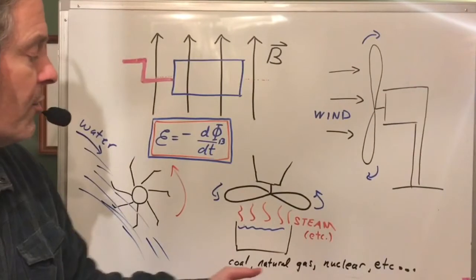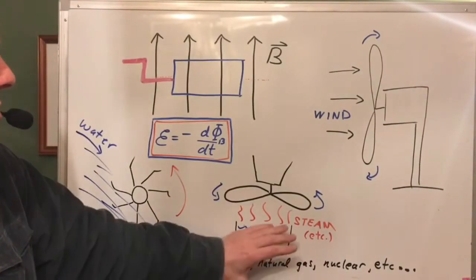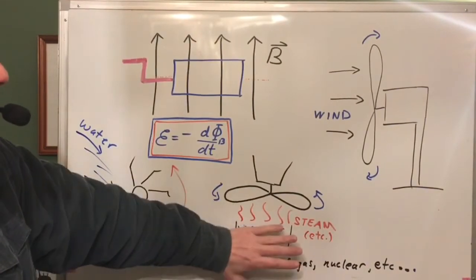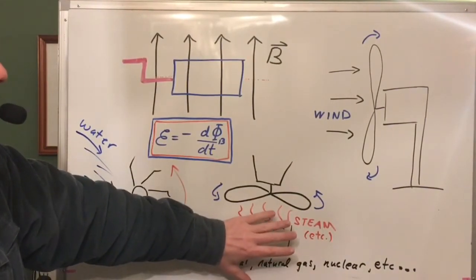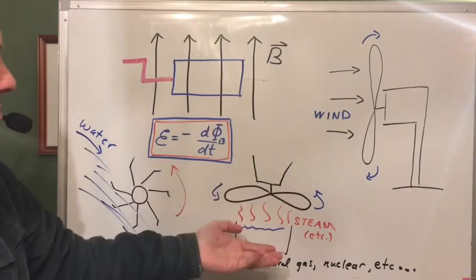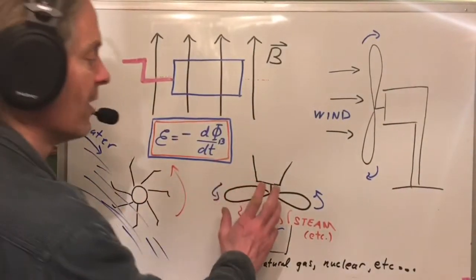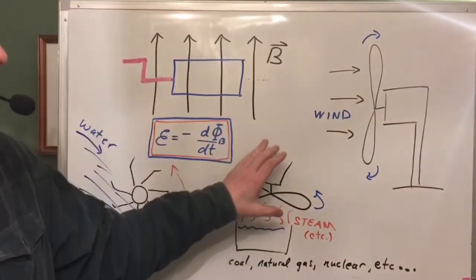Fossil fuels—coal, natural gas—those are used to heat... we burn them to heat up steam, to heat water, make steam. That steam passes through some turbine, some basically propeller system that turns, that rotates loops of wire in a magnetic field or vice versa, and we generate electricity that way.